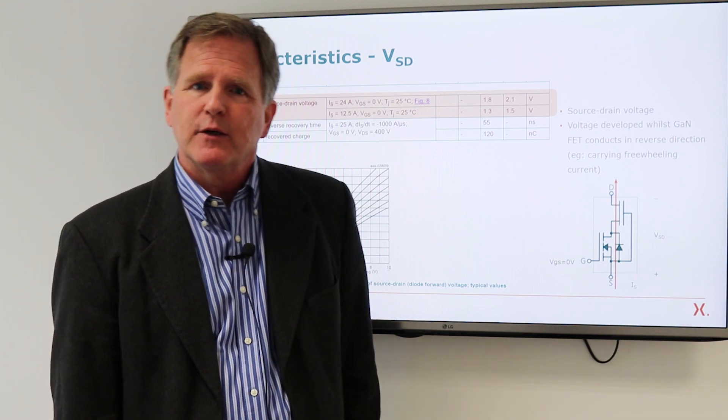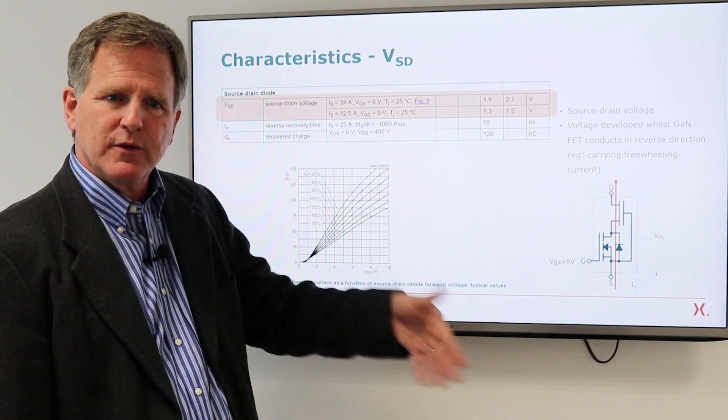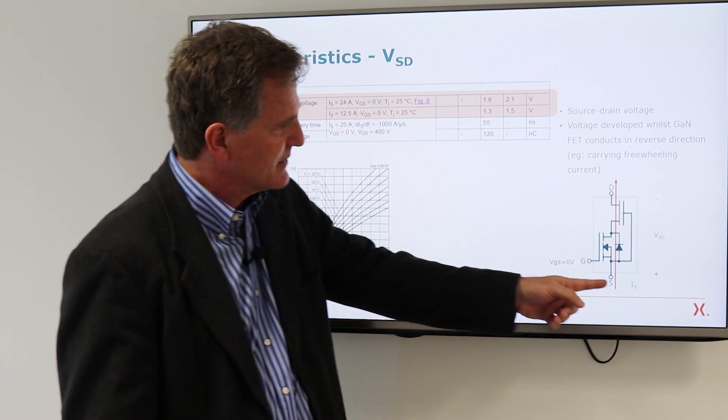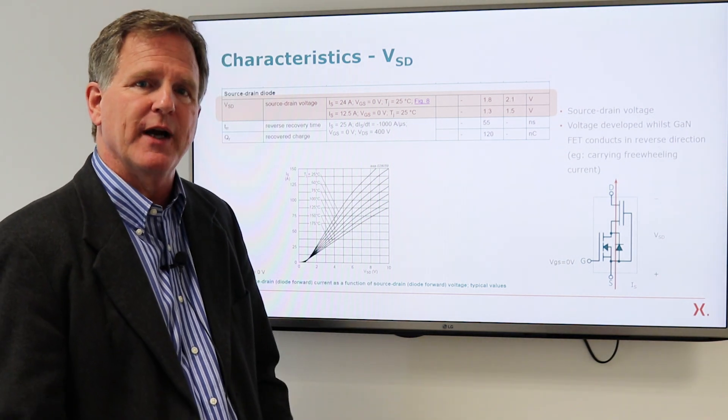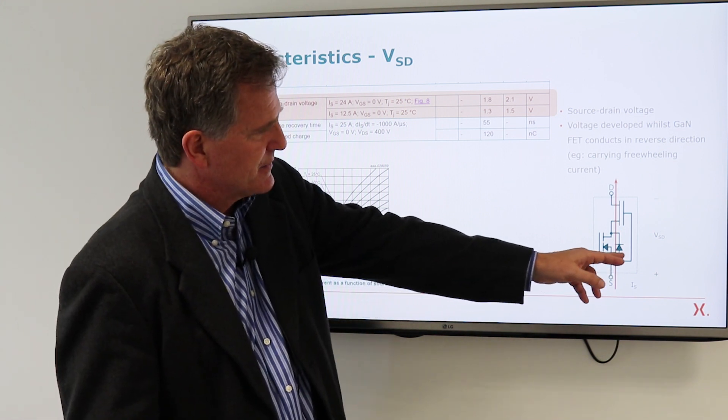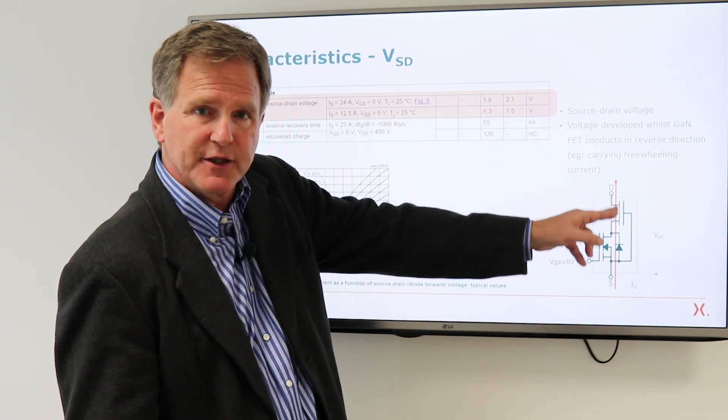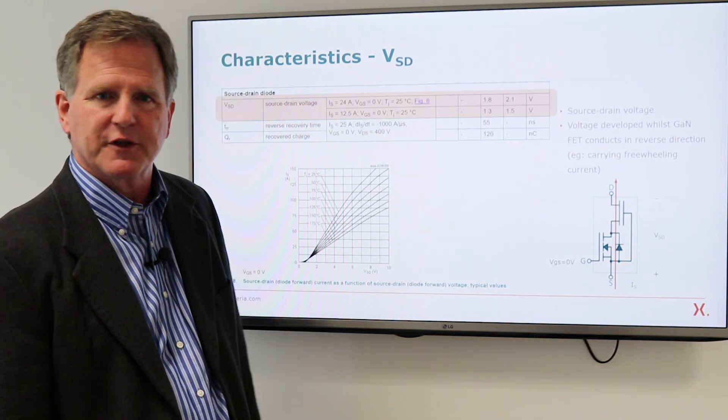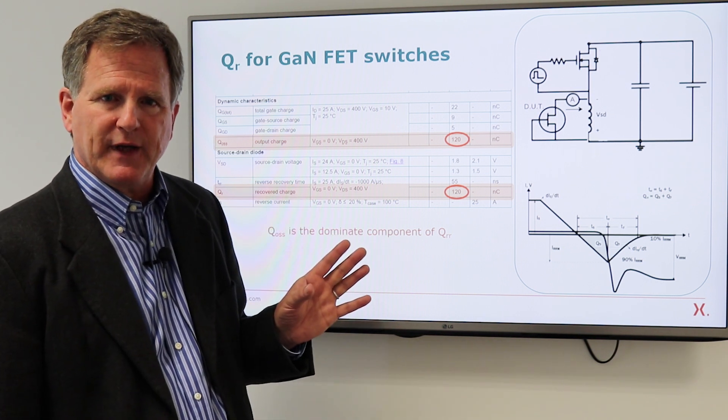There's a section on the source to drain diode. Now, when we say diode, the implication is the device is acting in a two terminal mode. So VGS is zero. The gate is connected to the source. Current is going through it in the reverse direction. It's acting like a rectifier, carrying freewheeling current. And in this mode, what you see is the voltage of the PN junction of the low voltage silicon MOSFET in series with some resistance associated with the GAN-HEMT. Basically what you would expect to see.